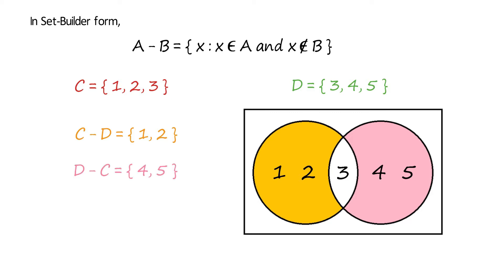Similarly, D minus C includes the elements 4 and 5. We observe that C minus D is not equal to D minus C.